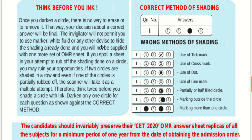Remember: think before you ink. Once you darken a circle there is no way to erase or remove it, so your decision about a correct answer must be final before marking. You cannot use marker or white fluid to hide shading. You will not be supplied with more than one OMR sheet. If two circles are shaded in a row and even one is partially rubbed off, the scanner will take it as a multiple attempt.